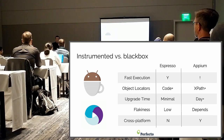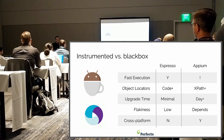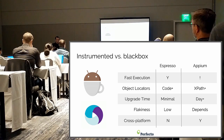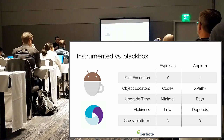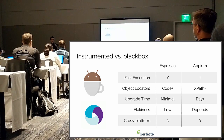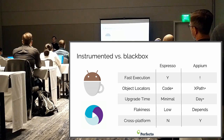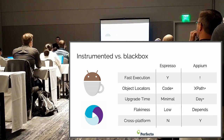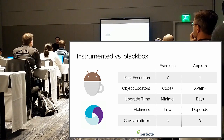Just like Espresso is very native to Android, there's a correlative companion on the iOS side — that would be XCUITest. It's really coming up as an equal citizen on the iOS side, and Espresso is on Android.